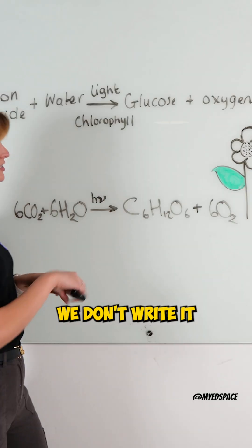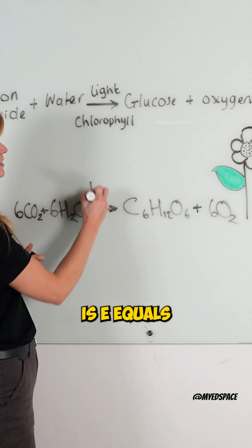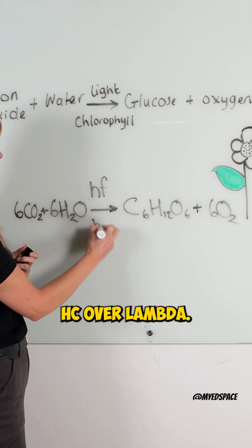In physics, we don't write it like this. The energy from the light is E equals HF, or you could write HC over lambda.